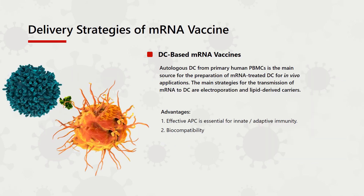As the most effective APC, dendritic cells can present antigens processed from various sources. Special characteristics of dendritic cells make them a suitable vaccination target, including their directional migration to lymph nodes and the high expression of major histocompatibility complex molecules, costimulators, and cytokines. Autologous dendritic cells from primary human PBMC are the main source for preparation of mRNA-treated dendritic cells for in vivo applications. The main strategies for mRNA transmission to dendritic cells are electroporation and lipid-derived carriers. DC-based mRNA vaccines have two advantages: 1. Effective APC is essential for innate and adaptive immunity. 2. Biocompatibility.